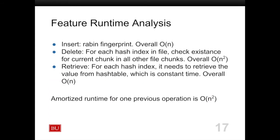For our feature runtime analysis: insert uses Rabin fingerprint, giving a linear runtime of O(n). For deletion, we need to check if a chunk exists in all other chunks — if it doesn't exist, we can delete it — making the runtime O(n²). For retrieve, it is a similar process to deletion, but retrieving data from the hash table takes constant time, so the runtime is O(n). Therefore, the amortized runtime for one overall operation is O(n²).